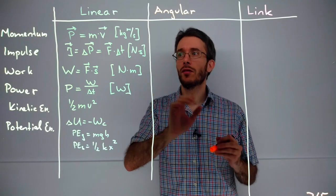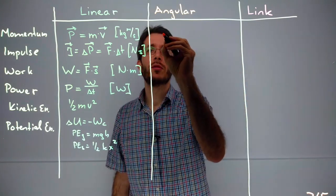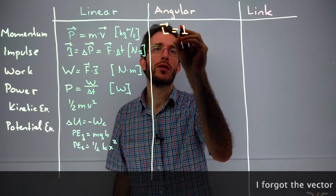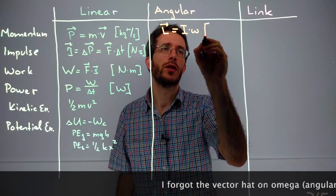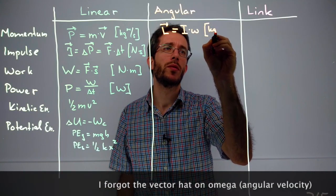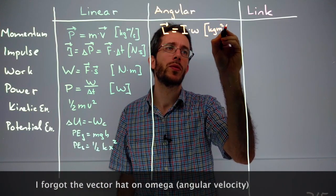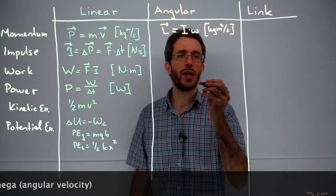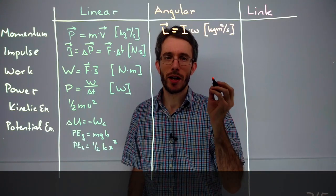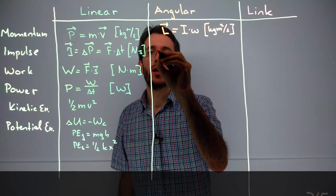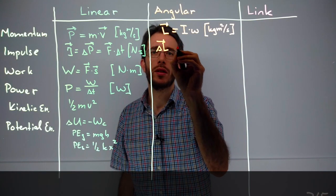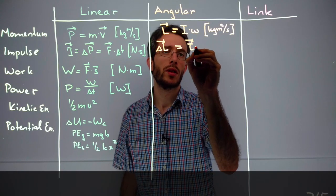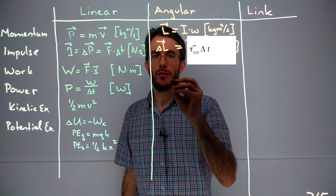Now, what are the angular equivalences? For the angular momentum, we had L, which is equal to the rotation inertia times omega, which gives us a unit of kilogram square meters per second. And instead of impulse, the rotational impulse, or the change in angular momentum, a vector, is according to this, if you do the equivalence,